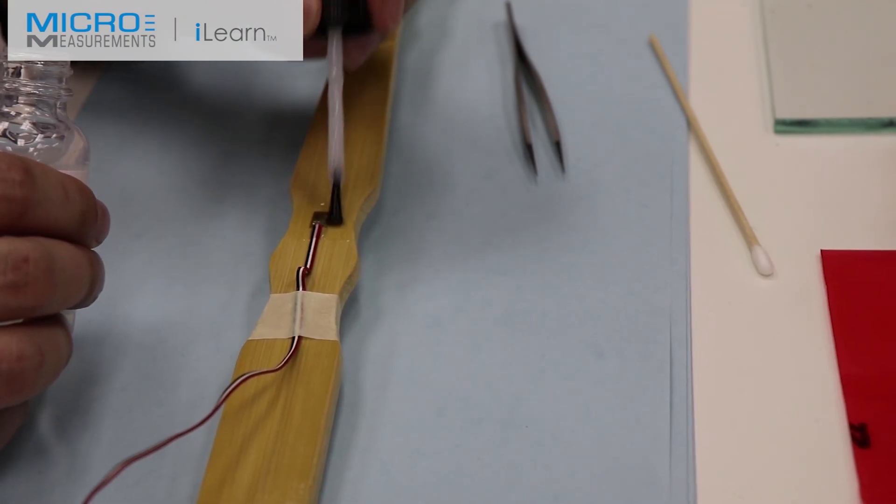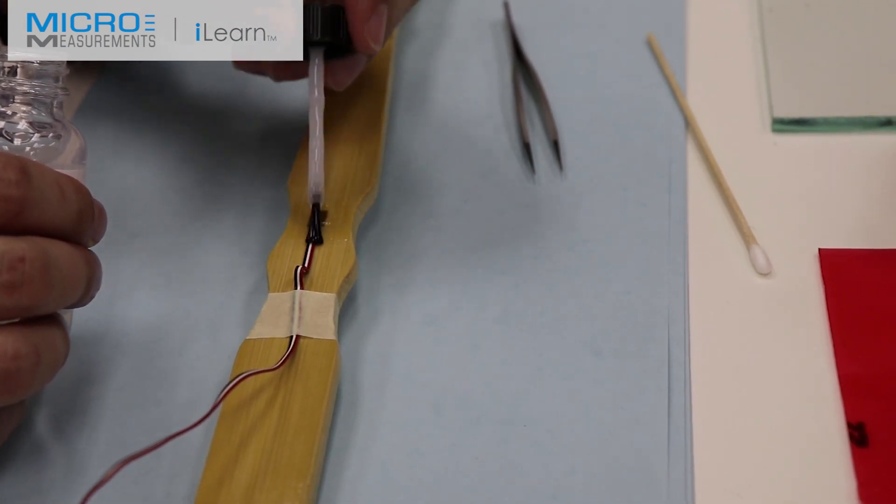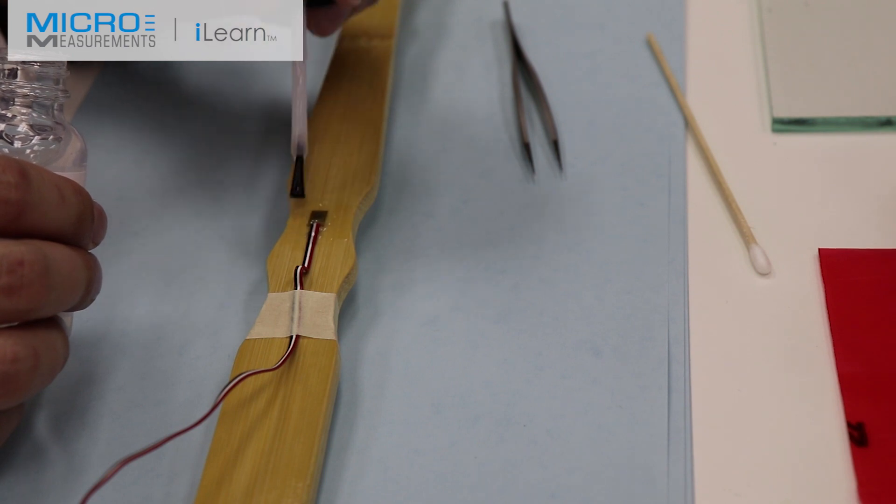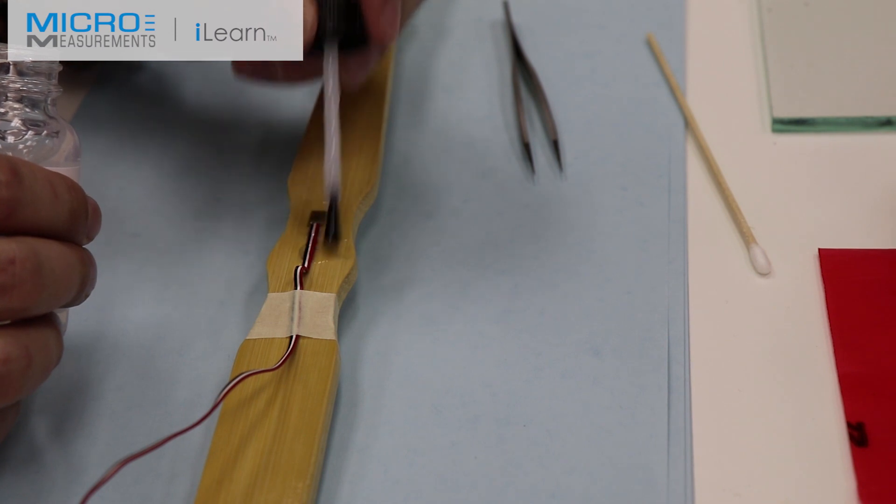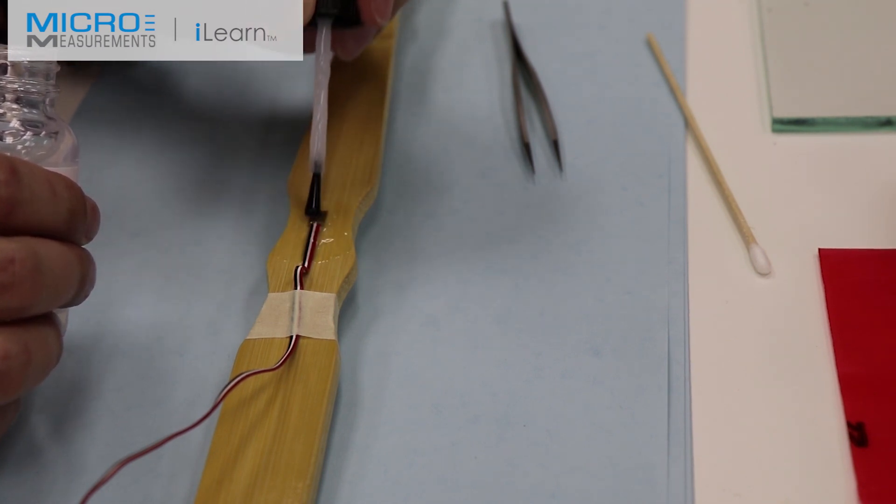He's working in and around the solder junctions, forcing a little bit of the environmental protection up underneath the lead wires, trying to get rid of any bubbles. He's entraining the lead wire and everything around it so that it helps in the strain relief application.